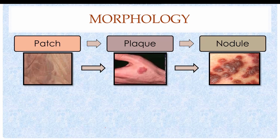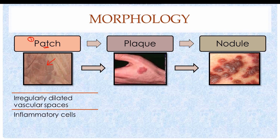Kaposi Sarcoma has three morphological stages. The first is the patch stage, in which Kaposi Sarcoma appears as a reddish or purplish patch on the skin, forming a macule. Macules are flat and have a different color from the surrounding tissue. The patch is composed of irregularly dilated vascular spaces, and due to infection, inflammatory cells such as macrophages, plasma cells, and lymphocytes are also present.